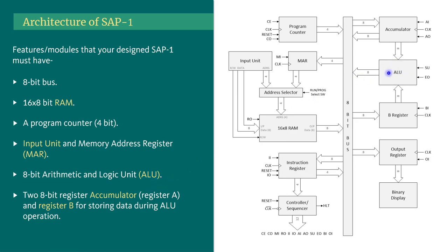For storing and sending data to the ALU we will need two registers: two 8-bit registers. One is called the accumulator and another is register B. The accumulator is connected with the ALU, and similarly register B is also connected with the ALU. The accumulator can also be called register A.